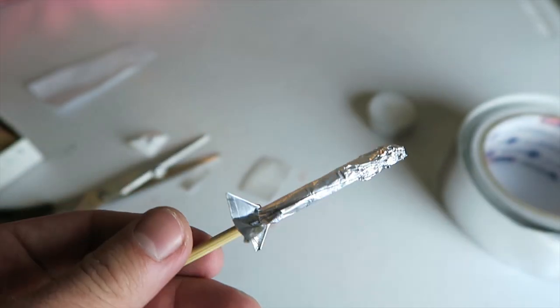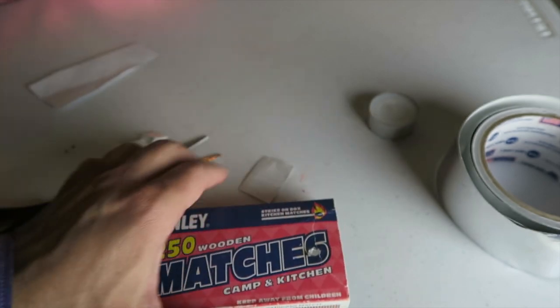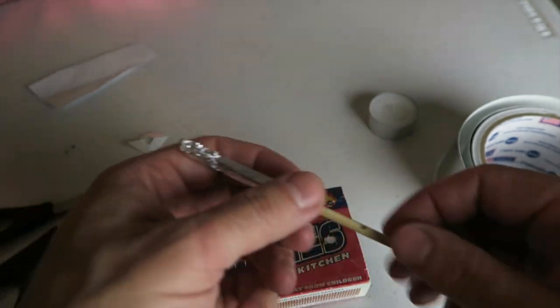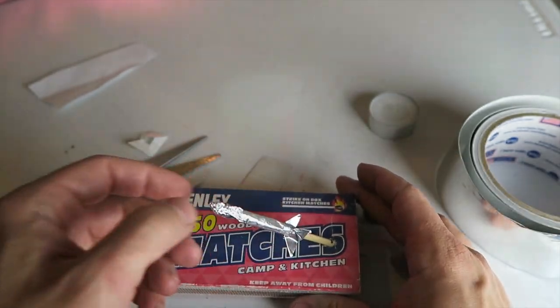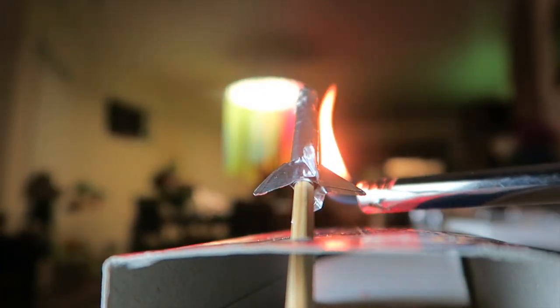Make sure it slides off and we now have our match rocket. Take the match box, make a little hole in it and slide your rocket through it. You could just use a lighter to light it from underneath.